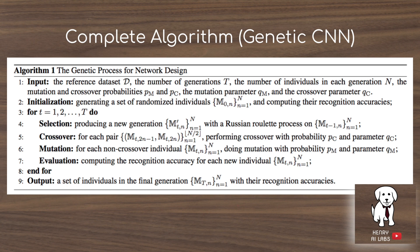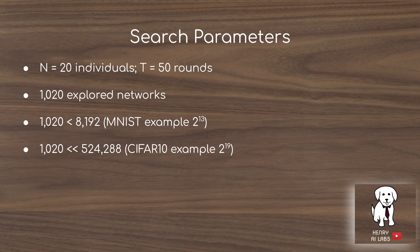Given all the mechanisms explained, the complete Genetic CNN algorithm works as follows: initialize a set of random neural networks using bit strings and Bernoulli distribution sampling; select them with the roulette process; perform crossover and mutation; then evaluate them again. Networks are constructed from the bit string and trained for about 25 epochs for MNIST or around 120 epochs for CIFAR-10. The search uses 20 individuals in the population over 50 rounds, allowing 1,020 explored networks in total.